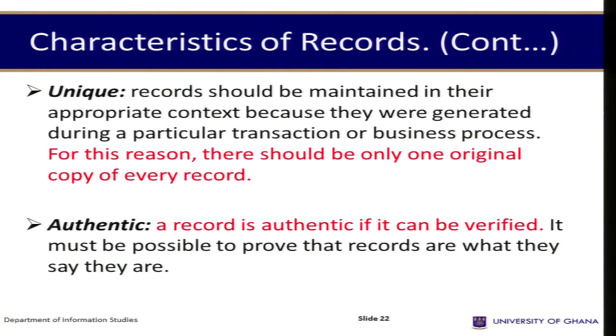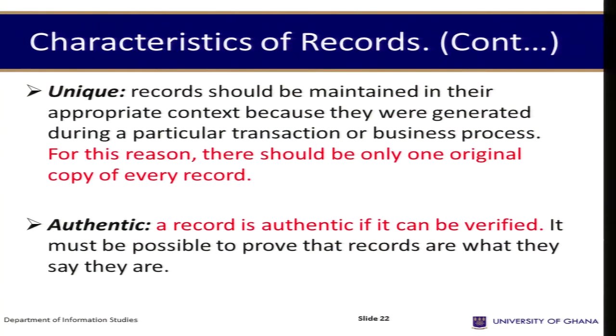The third characteristic is unique: records should be maintained in the appropriate context because they were generated during a particular transaction or business process. Records should be in the official custody of the institution that generated them to avoid tampering. Uniqueness also means that a record should be the original — there is only one original record; all others are duplicates. The fourth characteristic is authentic: a record is authentic if it can be verified and it must be possible to prove that the record is what it claims to be.